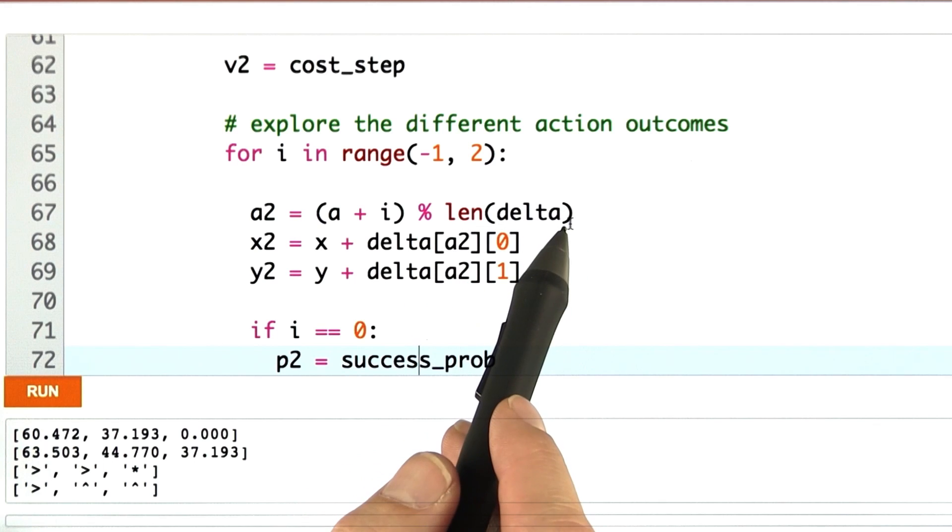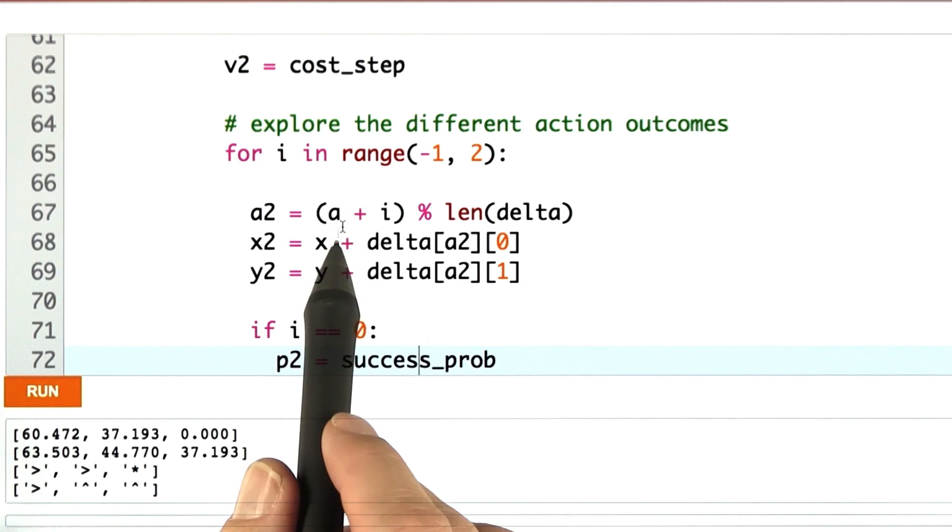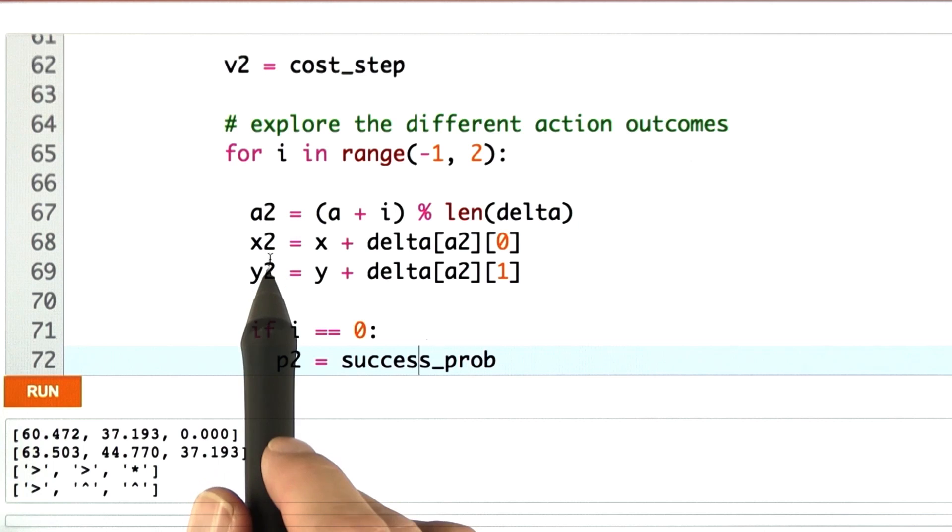Of course, I have to do the modulo 4 on the right side. And then the implementation is similar to before. I project the outcome into new coordinates x2 and y2.